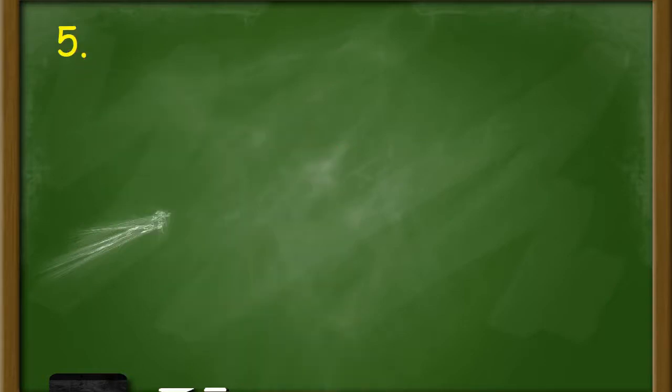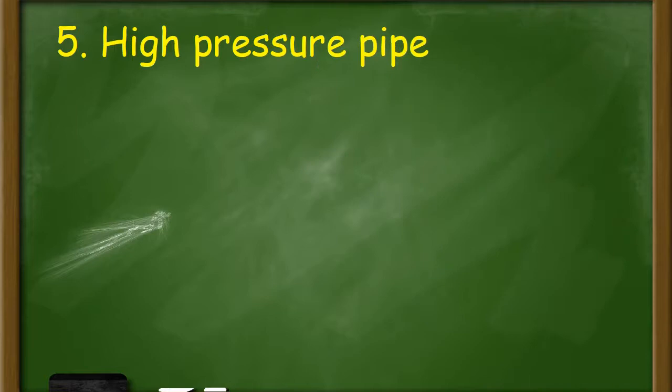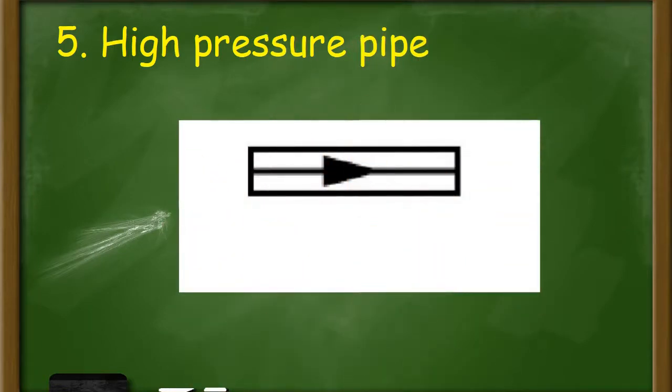Number 5: High pressure pipe. This symbol indicates high pressure pipe also known as shielded pipe.